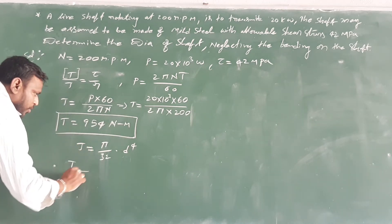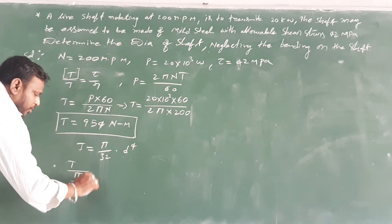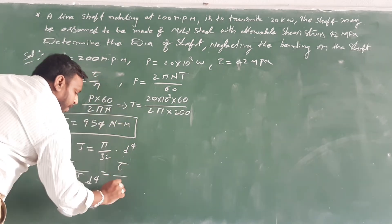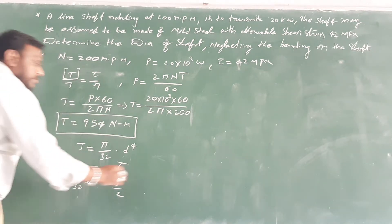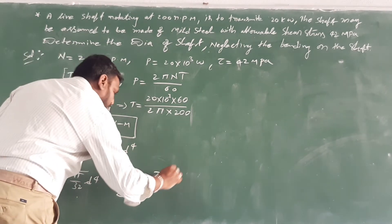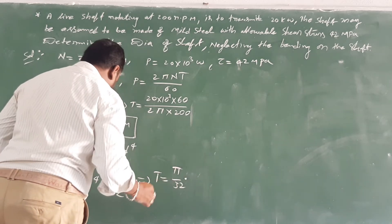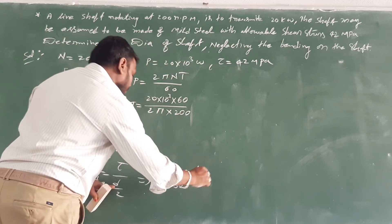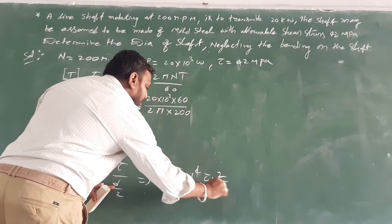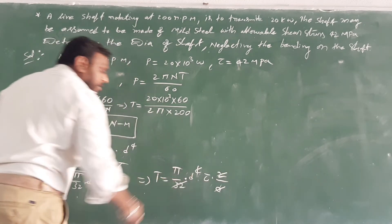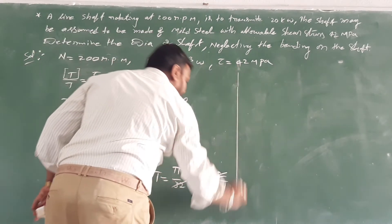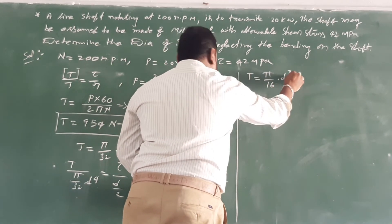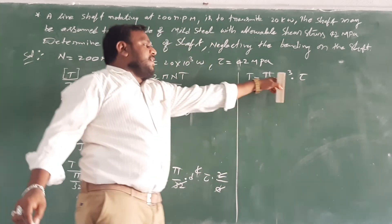T is equal to 955.3 N·m. From the torsion equation, T equals (π/32) × D⁴ × τ × (2/D), which simplifies to T equals (π/16) × D³ × τ. So D cubed equals T times 16 divided by π times τ.